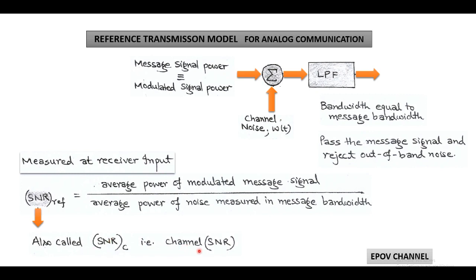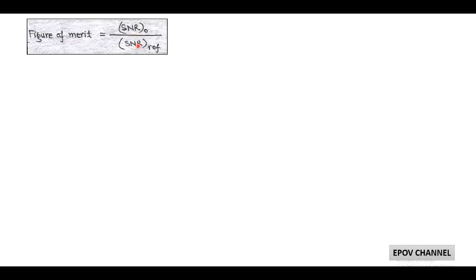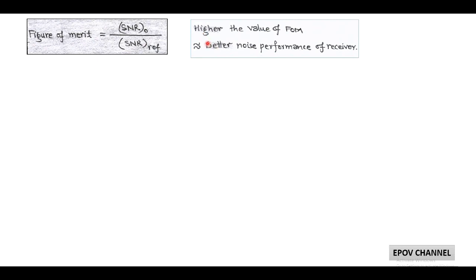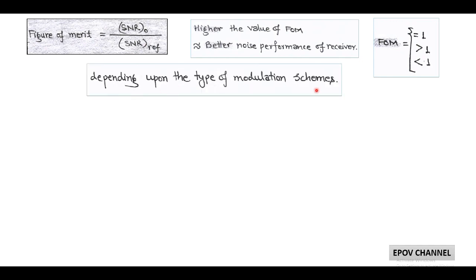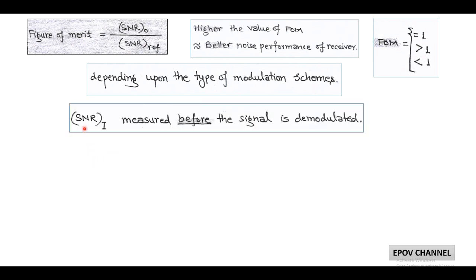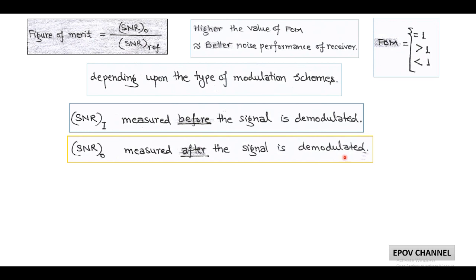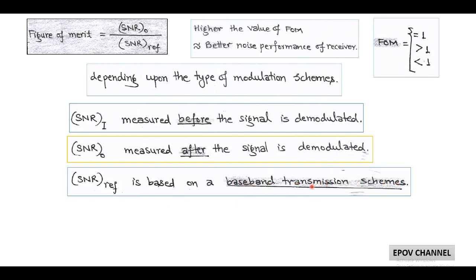With the help of reference SNR and output SNR we can find the figure of merit. The figure of merit equals the ratio of output SNR to reference SNR, and for better noise performance of the receiver this figure of merit should have a high value. It may be equal to 1, greater than 1, or less than 1, which totally depends upon the type of modulation scheme. So we have discussed three types of signal to noise ratio: input SNR measured before the signal is demodulated, output SNR measured after demodulation, and reference SNR based on a baseband transmission scheme. With the help of input SNR and output or reference SNR we can determine the figure of merit, which is used for analysis of noise performance of the receiver. Since the figure of merit is a ratio of two SNRs, it is a dimensionless quantity.